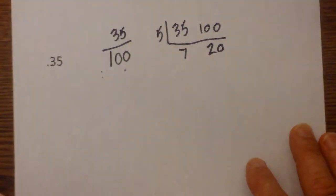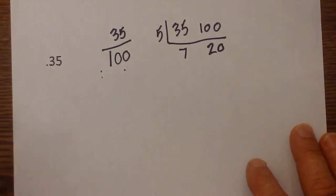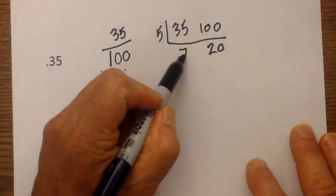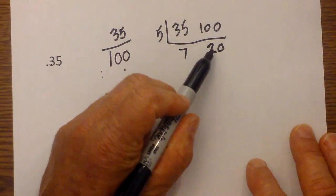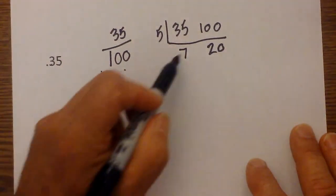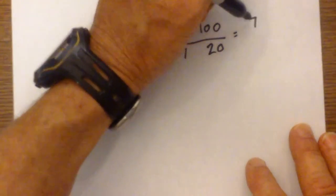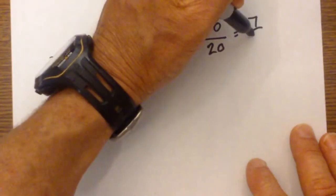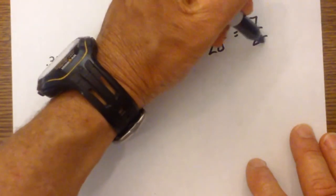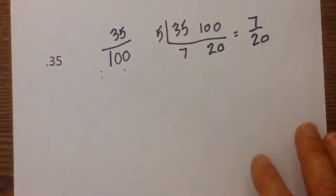At this point, seven will not go into 20. Seven is prime, so the fraction is 7/20ths.